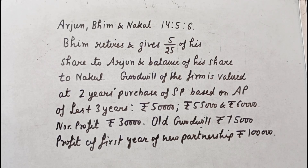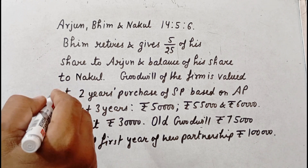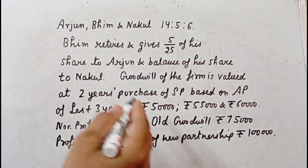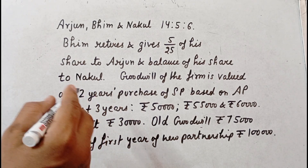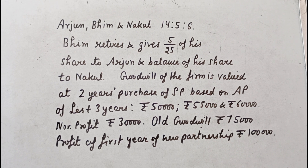Arjun, Bhim and Nakul are 3 partners in ratio of 14 to 5 to 6. Bhim is retired and he gives 5 by 25 of his share to Arjun and the balanced share to Nakul. Goodwill of the firm is valued at 2 years purchase of super profit based on average profit of last 3 years. Profits of last 3 years are Rs.